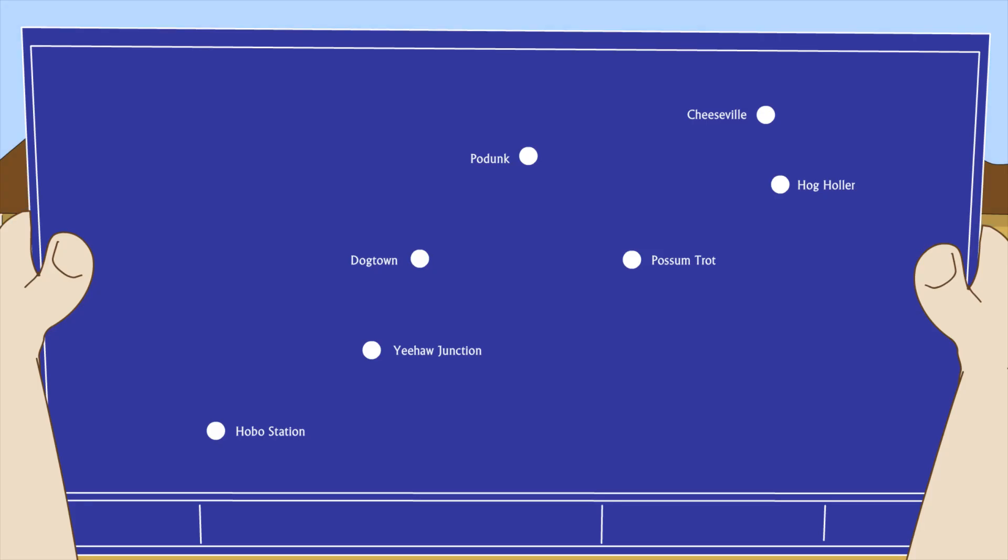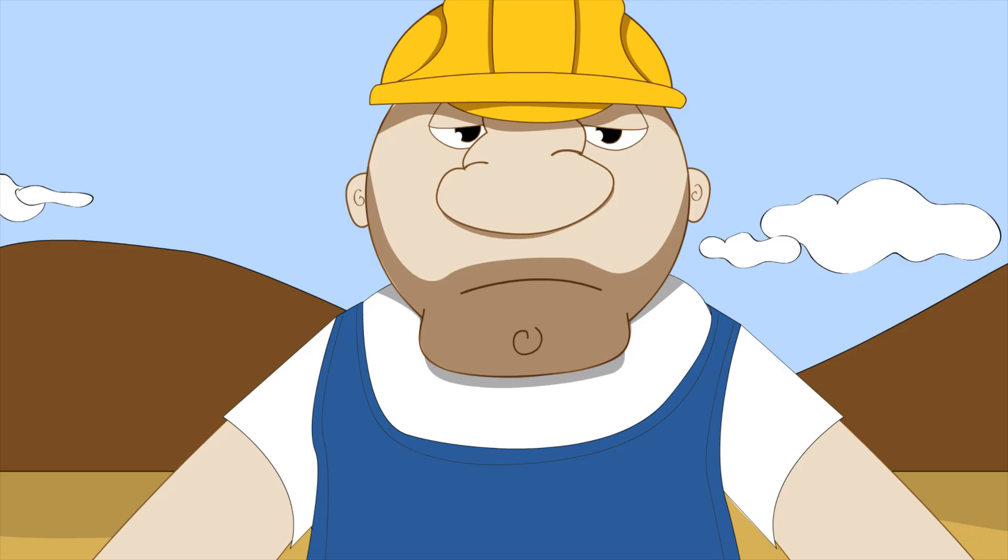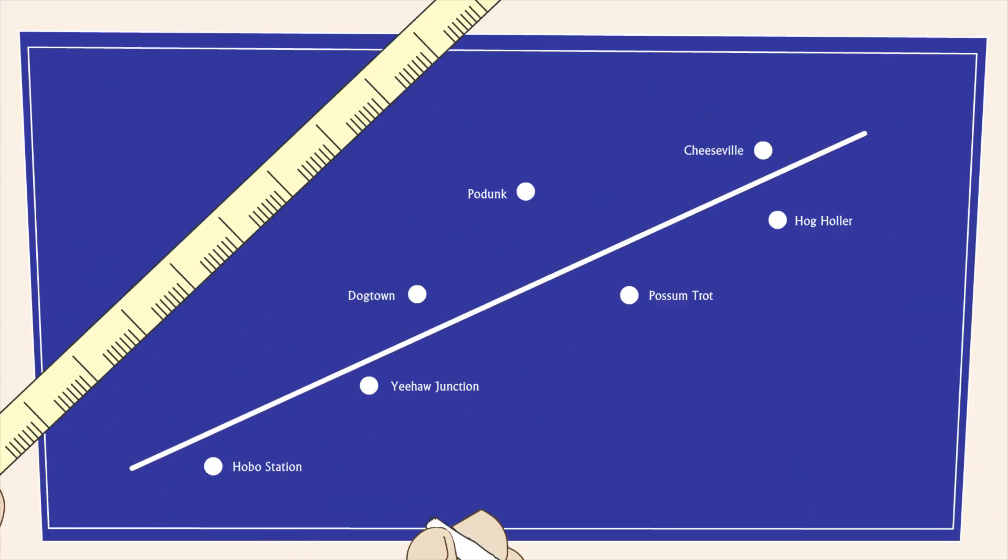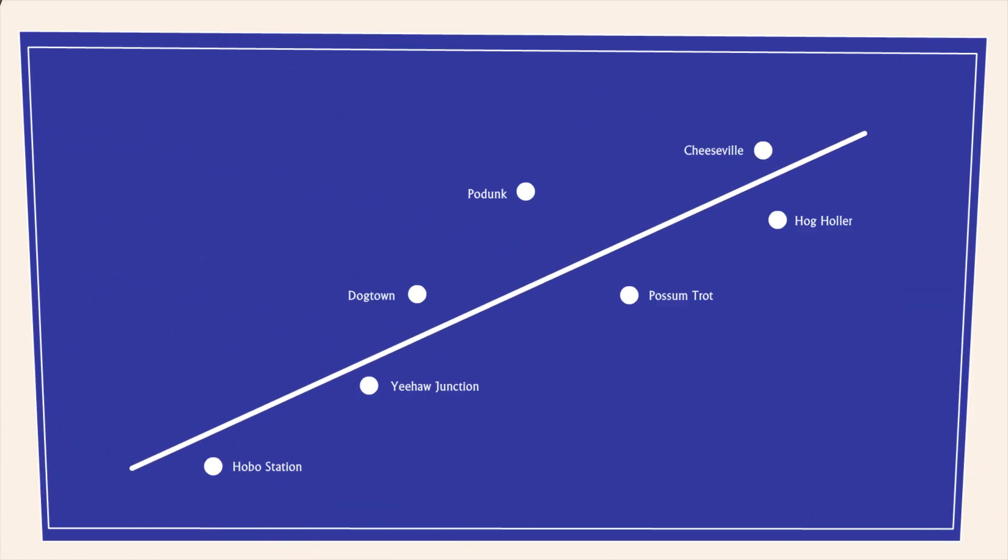This is similar to trying to build a straight road that comes as close as possible to several different towns. The optimum path might be the one which minimizes the sum of the distances between the road and the towns.